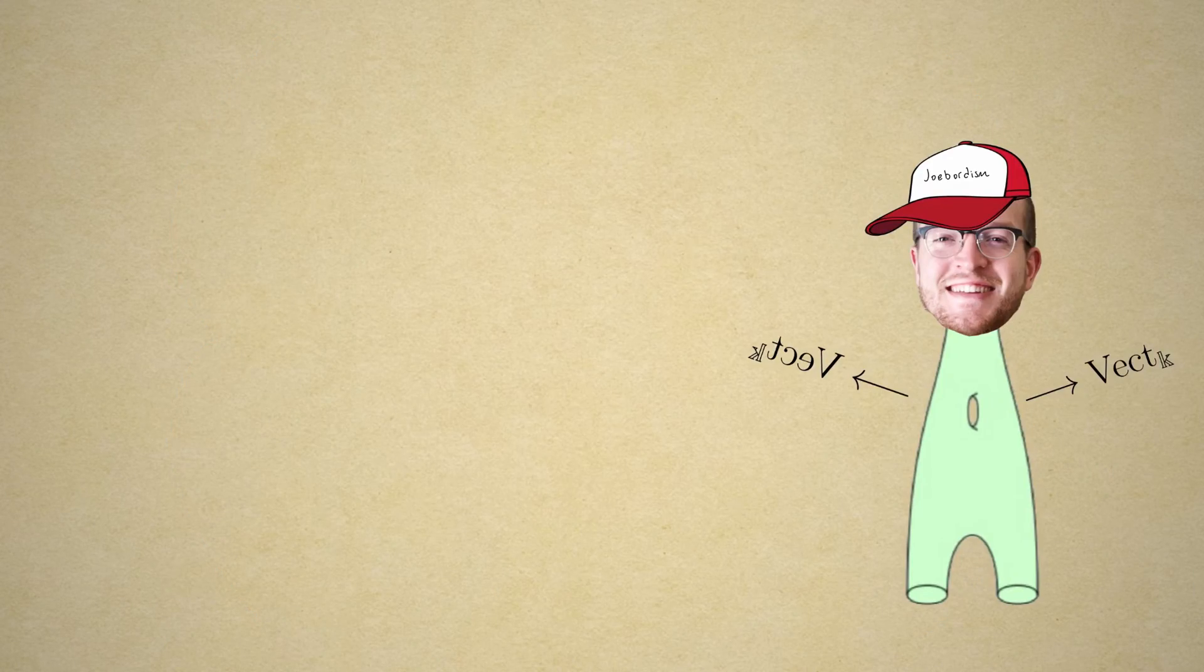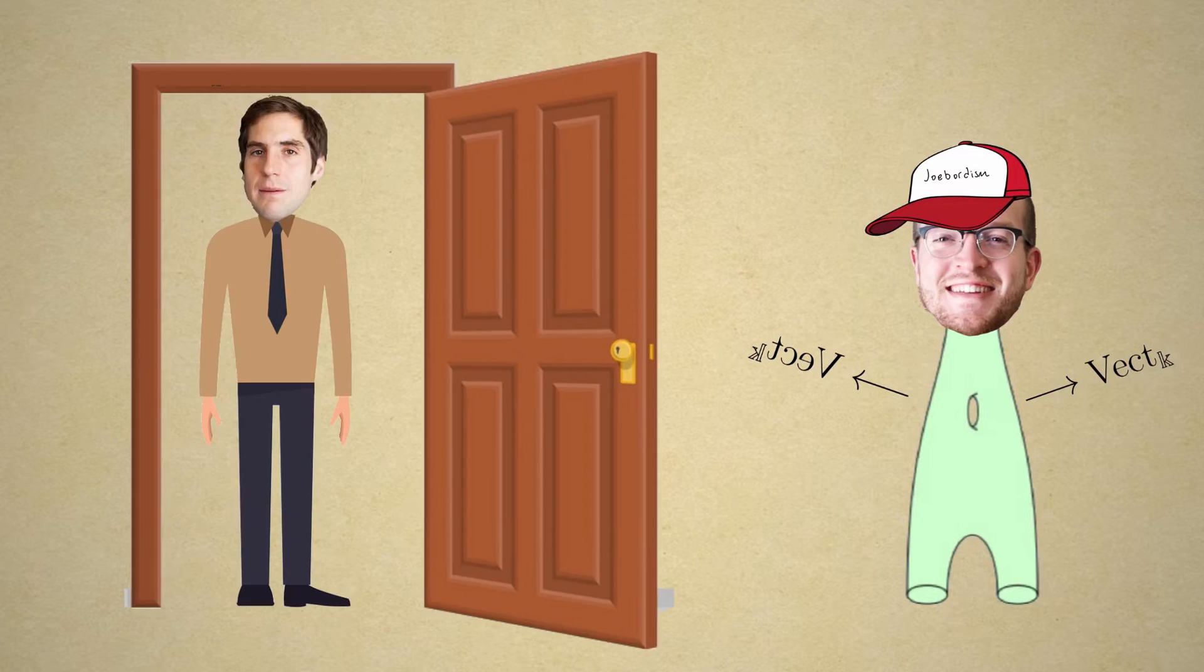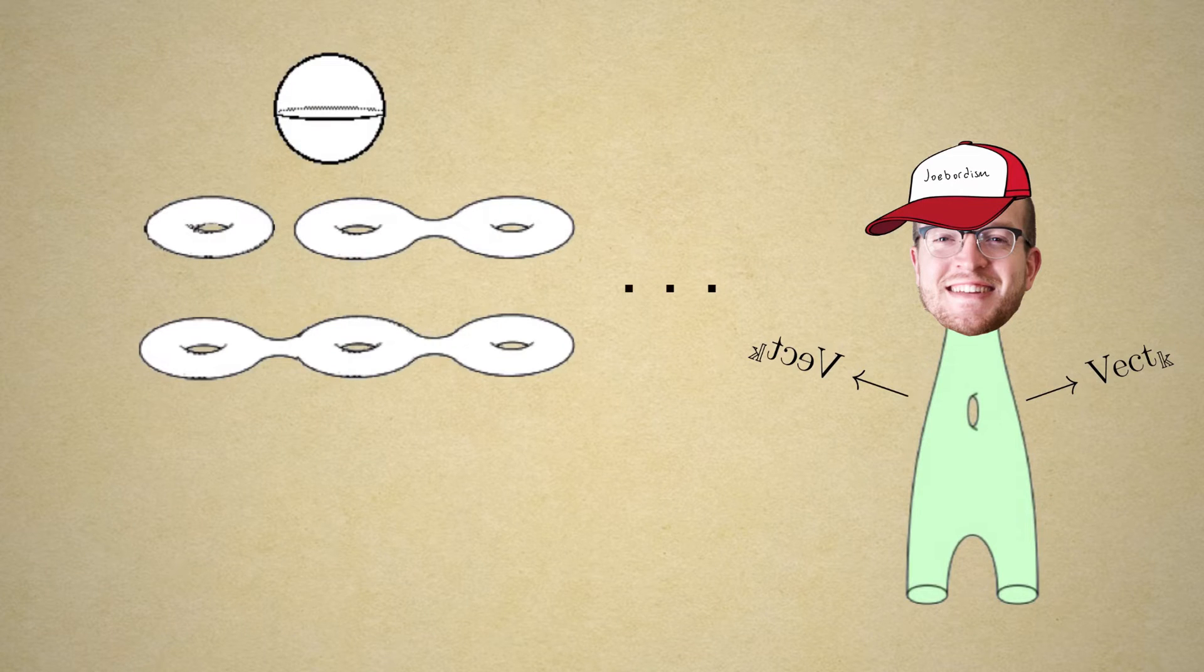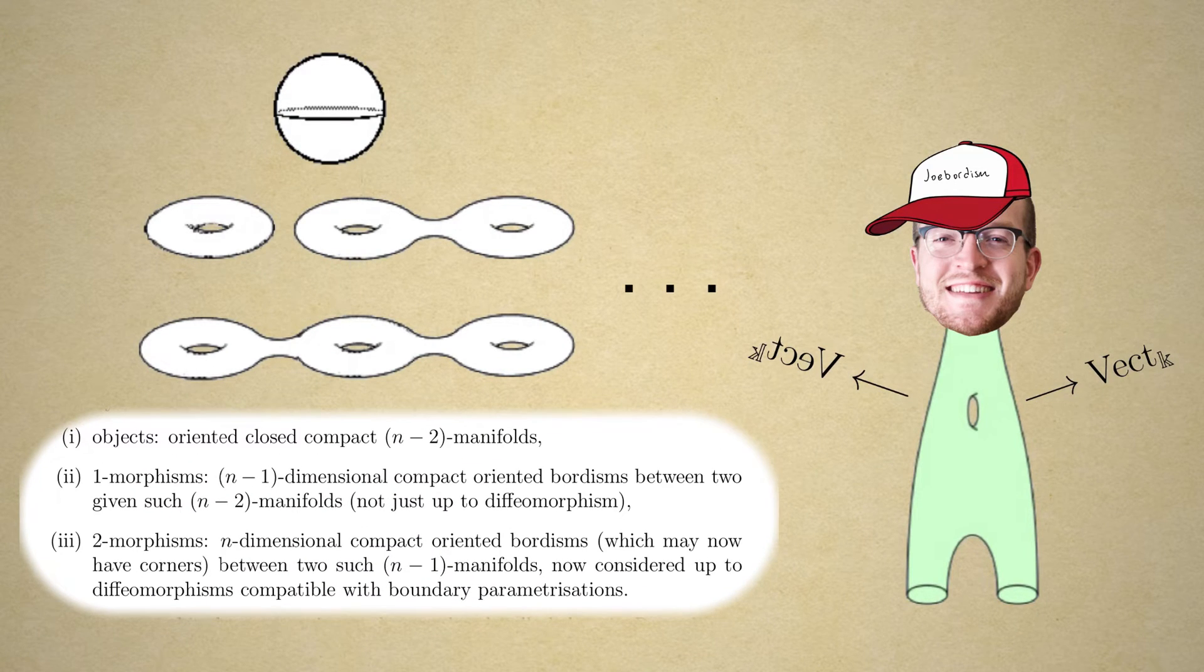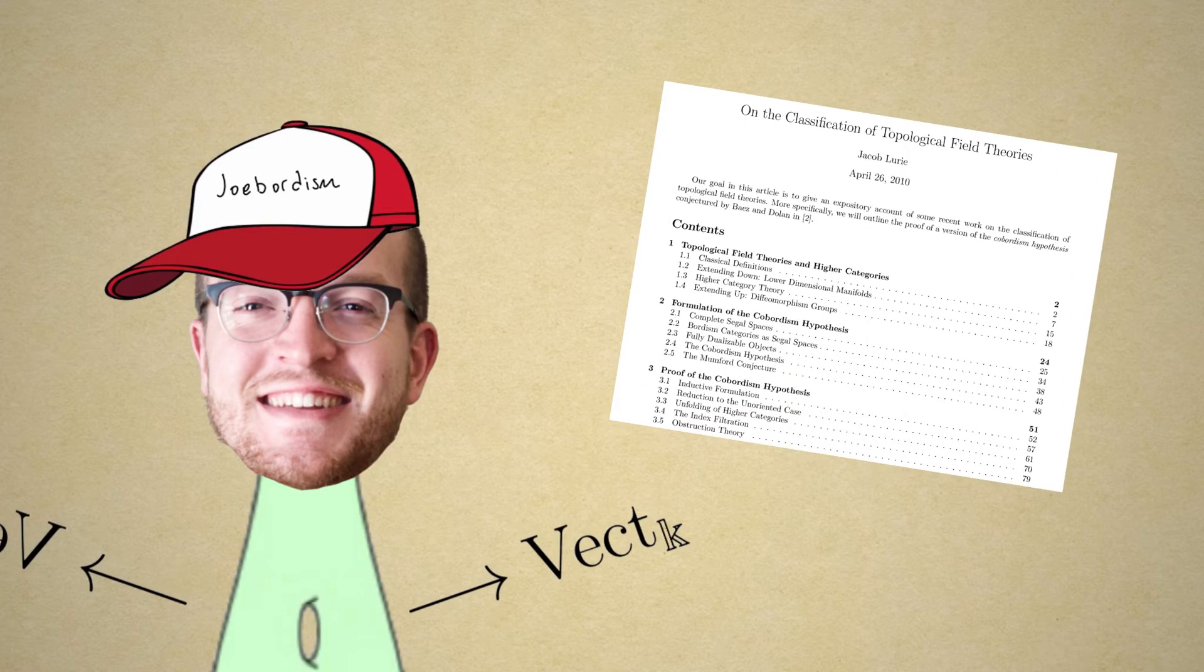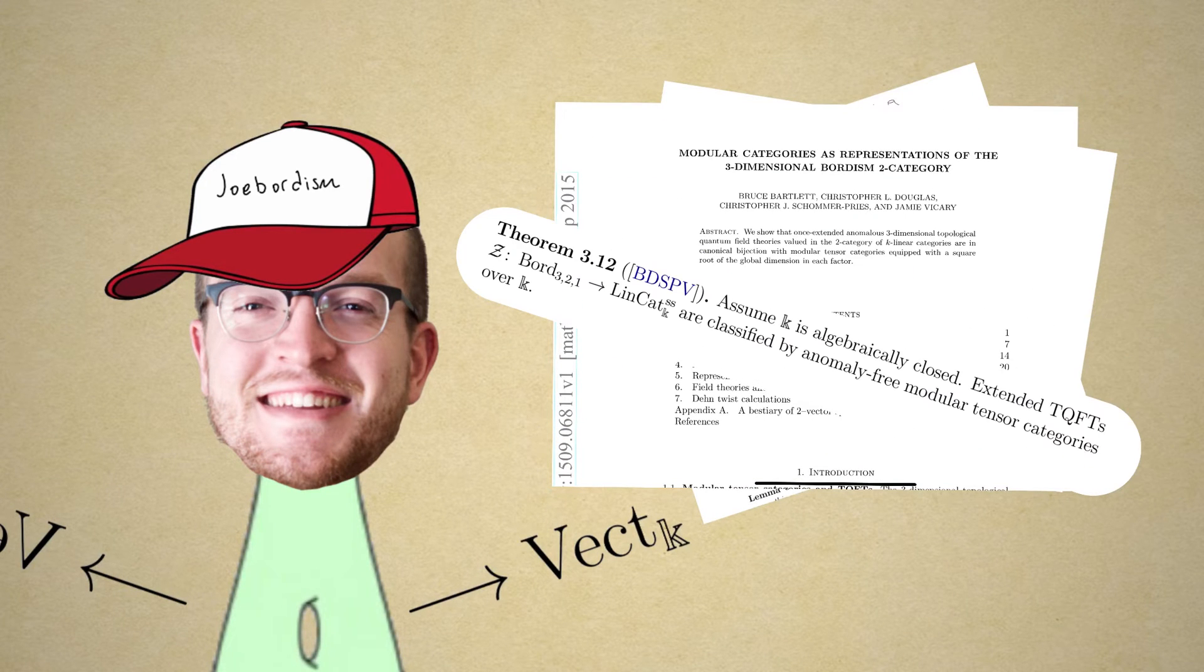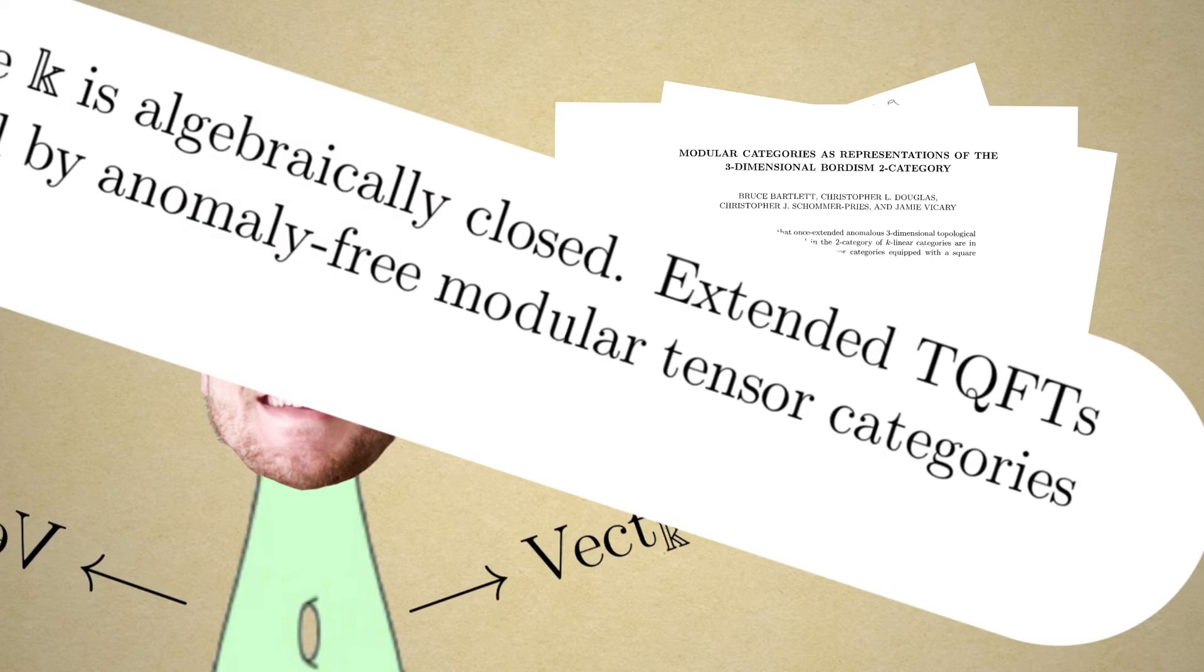Now it's time for dimension three. Knock, knock, who's there? Higher category theory. Infinite generators just won't do. So we'll take morphisms to level two. I've read all the papers, a categoric adventure. I still don't know what it means to be modular tensor.